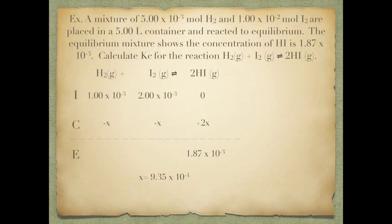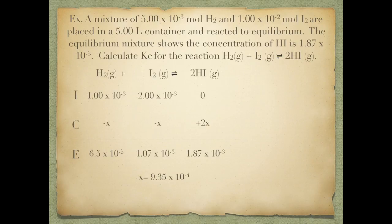To complete the table and find the equilibrium concentrations — for iodine, I take 2.00 times 10 to the negative third and subtract 9.35 times 10 to the negative fourth to get 1.07 times 10 to the negative third. For hydrogen gas, same thing — you subtract and you end up getting 6.5 times 10 to the negative fifth. These are your equilibrium concentrations, not what you started with.